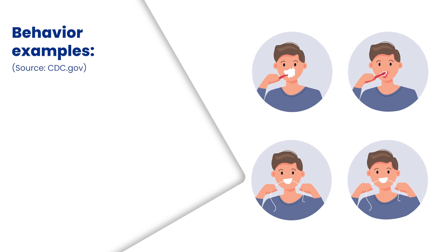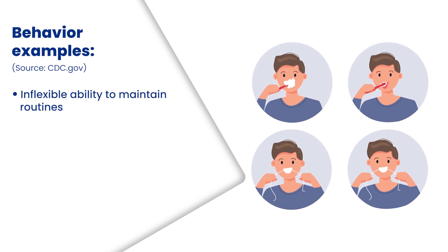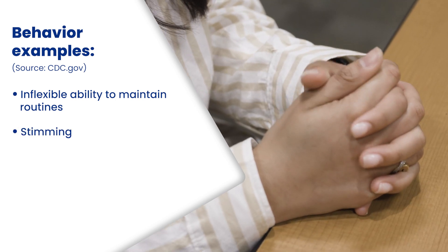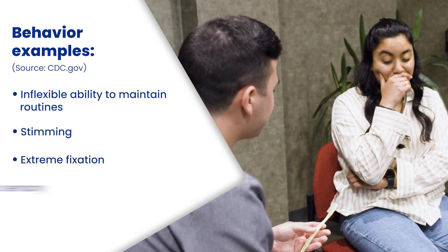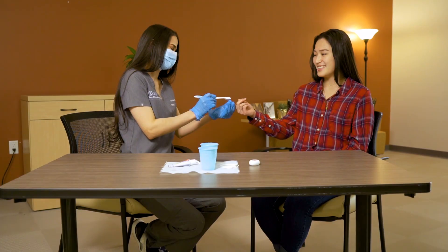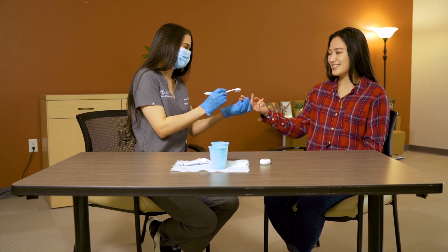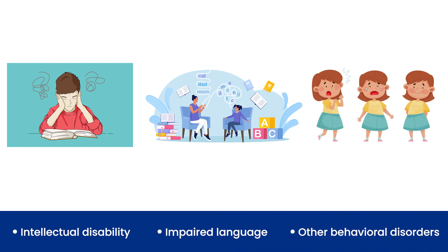Behaviors can vary as well. Examples are inflexible ability to maintain routines, repetitive motor movements known as stimming, extreme fixation, or hypersensitivity to sensory inputs. In some cases, ASD can present with various comorbidities. Among them are intellectual disability, impaired language, or other behavioral disorders, such as attention deficit hyperactivity disorder, or ADHD.